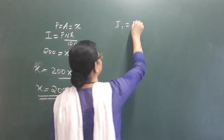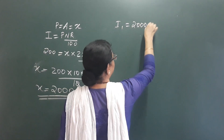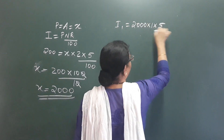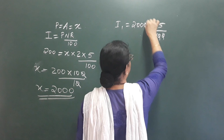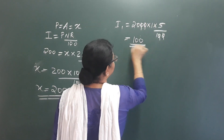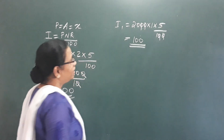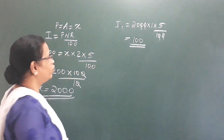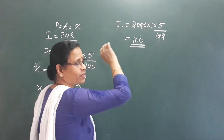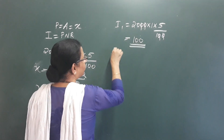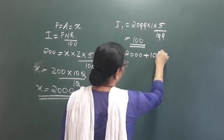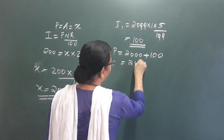Now for compound interest with principal 2,000, we deposit in the first year. 5% interest: 2,000 into 5 by 100. 5 into 2 is 10, so the interest is 100 rupees. The first year principal plus interest is 2,000 plus 100, which equals 2,100 rupees.